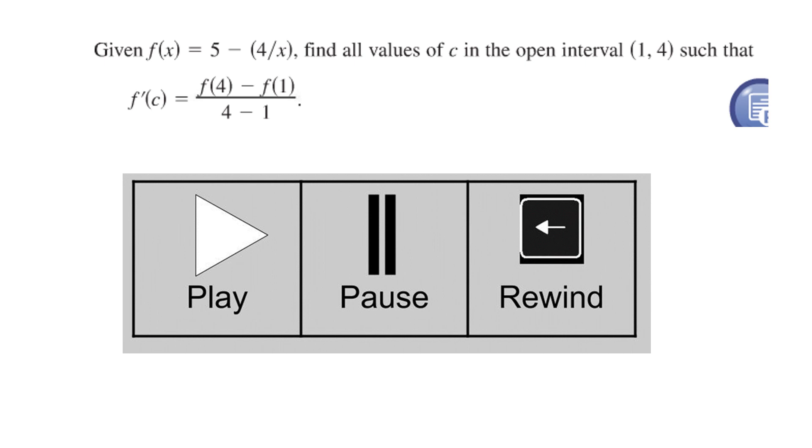Okay let's then consider the problem here given f of x equal 5 minus 4 over x find all values c in the open interval 1 to 4. Notice that between 1 and 4 we don't have a problem with this denominator being 0 so it's good such that f prime of c equals f of 4 minus f of 1 all over 4 minus 1. You see here what we're really asking is let's find the value of c that satisfies the mean value theorem that's another way I could have said this. So again you should pause this try to work the problem and then come back and compare your work to what we did.